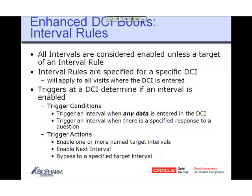You can trigger an interval when any data is entered into the DCI, or when there is a specific response to a question — which must be related to a DVG. You can also use derivations to trigger based on an actual numeric value, like less than 20. Trigger actions can be: enabling one or more named intervals, enabling the next interval in sequence, or bypassing to a specified target interval — which disables everything between where you are and where you're going.